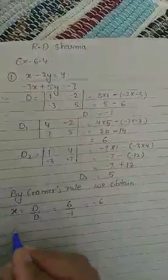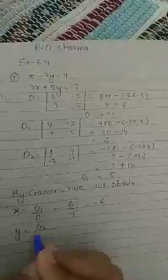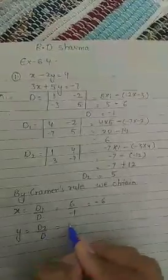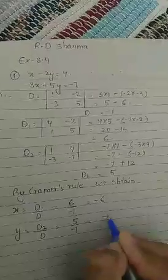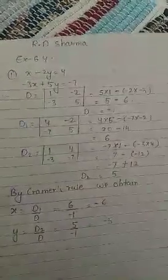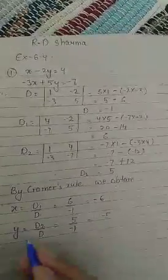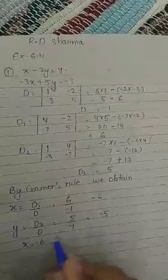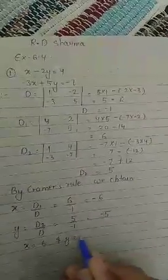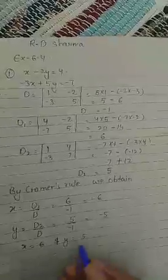And y is equal to D2 upon D. So D2 is 5 and D is minus 1. So the answer is minus 5. So the value of x and y is minus 6 and y is equal to minus 5.